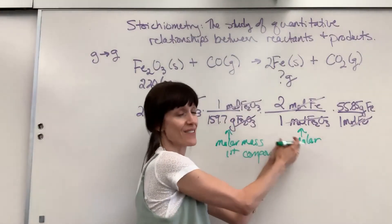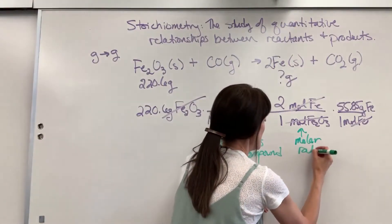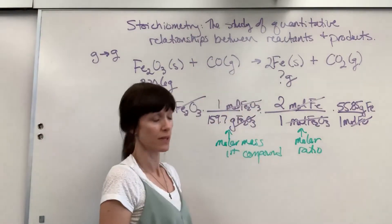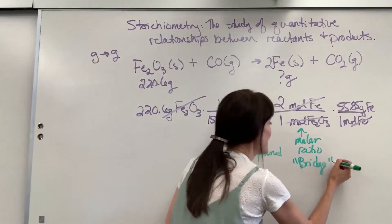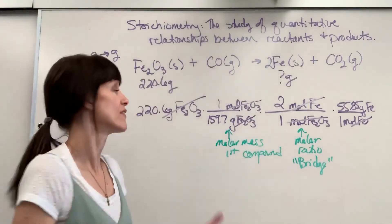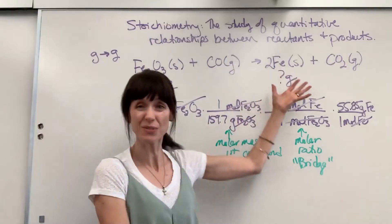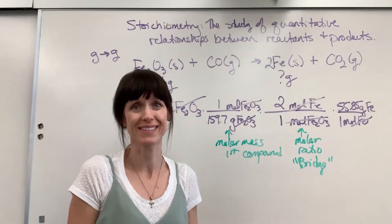This is the heart of stoichiometry. This allows us to go from one compound to another, and that's what I call the bridge. I think that is so cool that we can have information about one compound and end with information about another compound. Awesome!